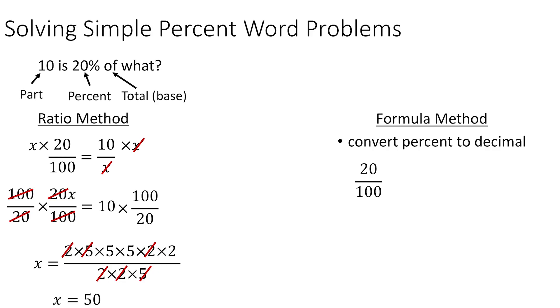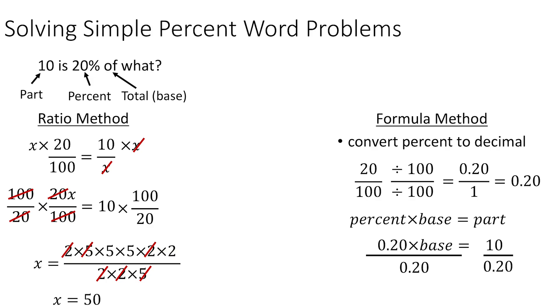Using the formula method, we're going to convert the percentage to the decimal. So 20 over 100 gives us 0.2. And we're looking for the base, so 0.2 times some base is equal to 10. So solving for the base, we're going to take the 0.2 and divide by it on both sides. And so the base is equal to 10 divided by 0.2, which is actually the same as multiplying by 5, and that gives us 50.